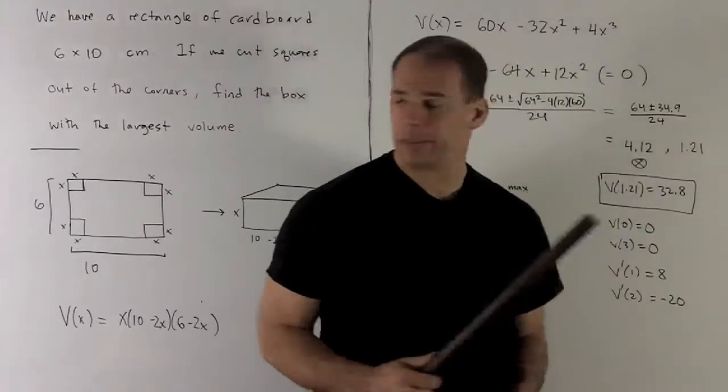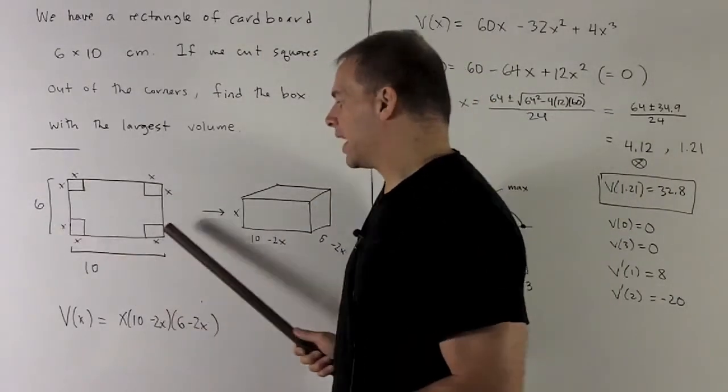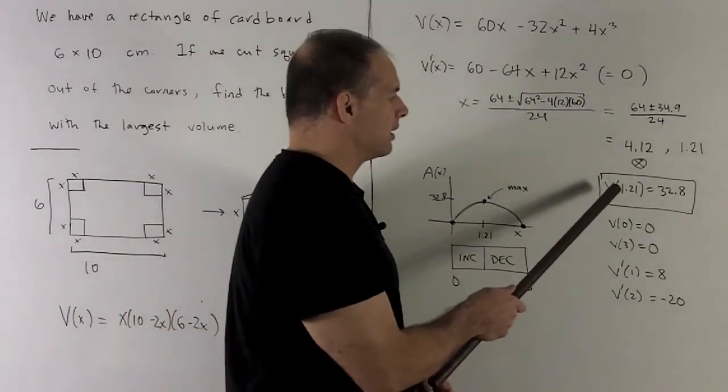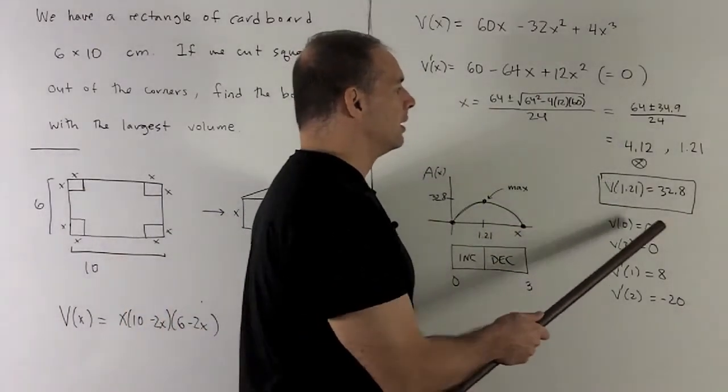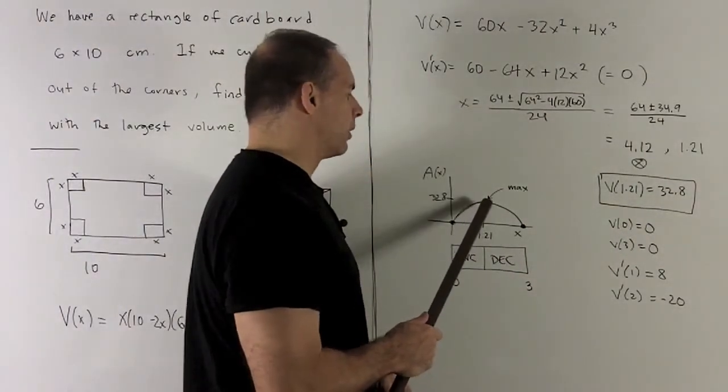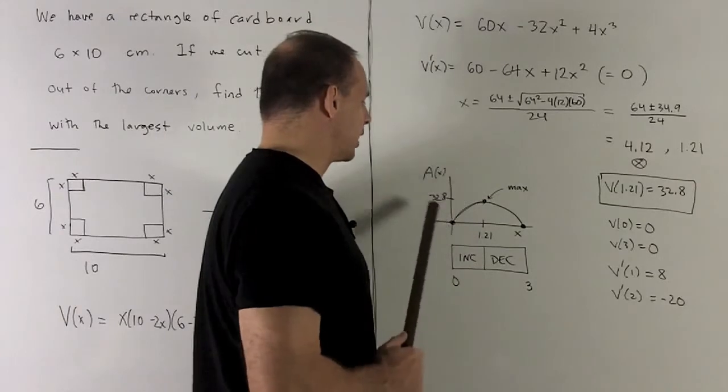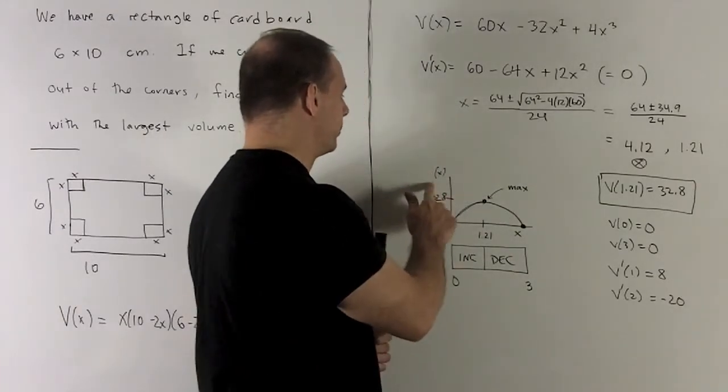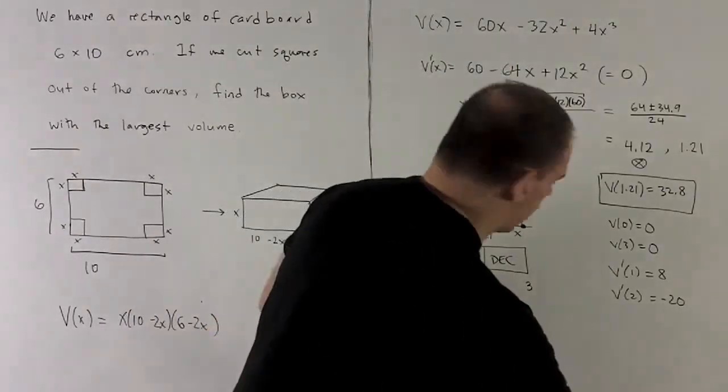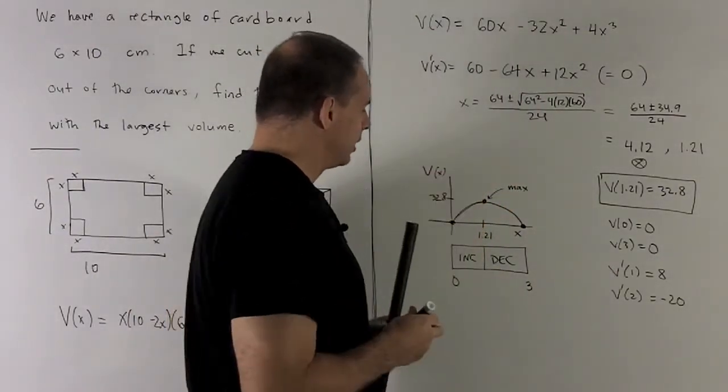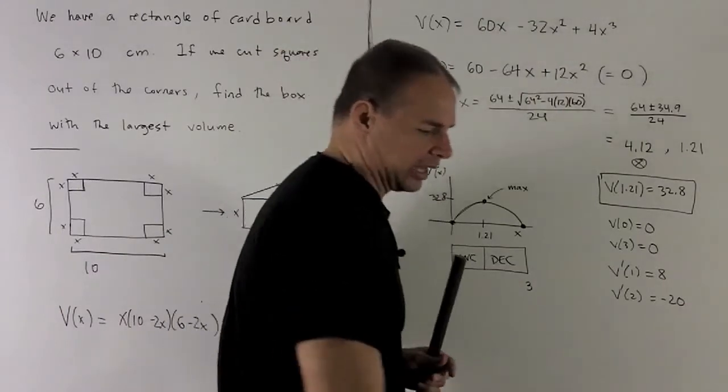1.21, that's perfectly fine by the test I just did. So I'll stick that into the volume equation, and we see that v of 1.21 is 32.8. That's going to be my candidate for a maximum. So I'll set up a little picture of the graph of the volume. And so we see that we have one point at 1.21. Y value is 32.8.